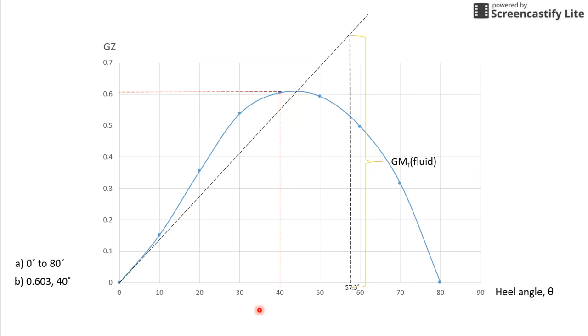And so, I will just go through some of the important points that you have to know in a GZ curve. So, the first point will be the maximum point where it actually determines the maximum external upsetting moment of the vessel. So, what does this mean is actually this is where the maximum heeling moment that the ship can actually withstand without capsizing.